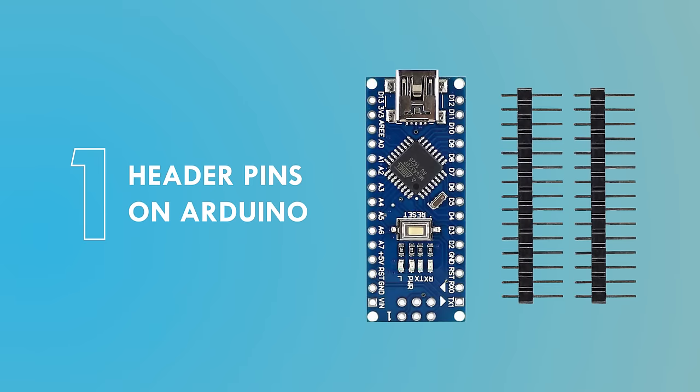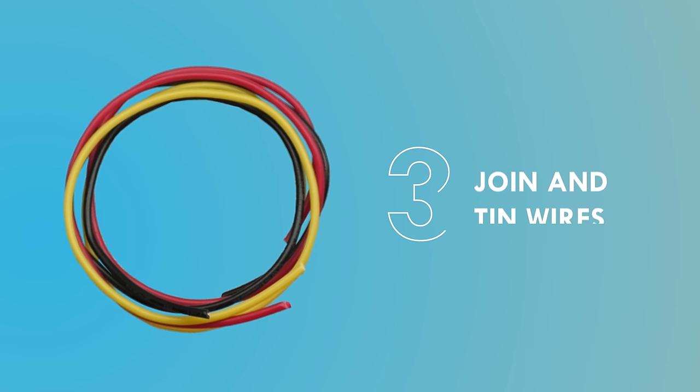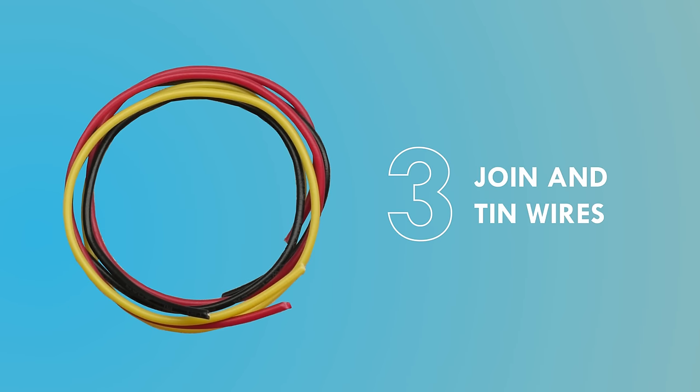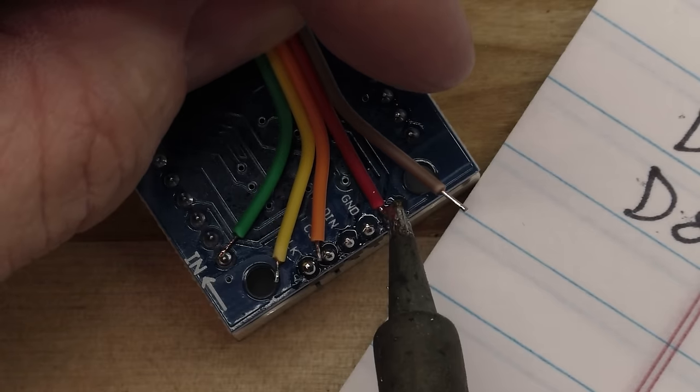We are going to learn to solder today. I picked three different case scenarios. First, we're going to solder the header pins on an Arduino. We're going to solder a variety of components on a PCB. And third, we're going to learn how to join wires together and tin the wire tips. Once you know those, you can do most soldering jobs in hobby electronics. Well, I'm excited because I need to learn how to solder. Yes, you do.